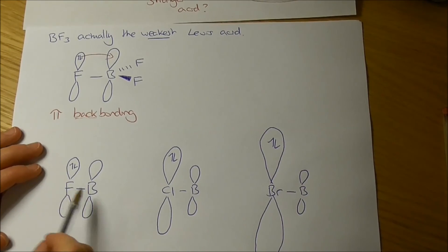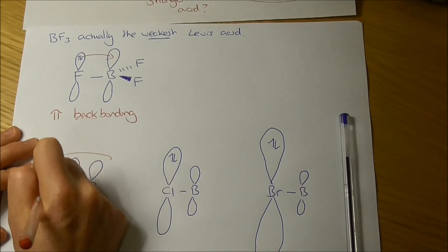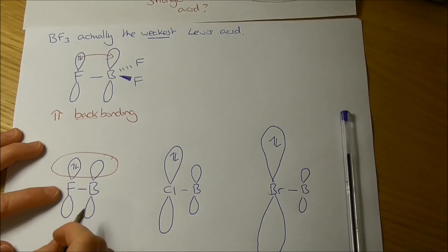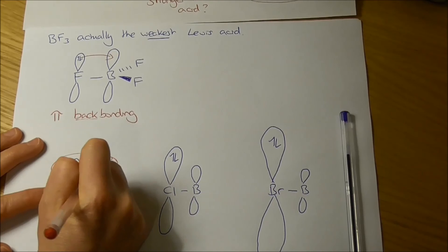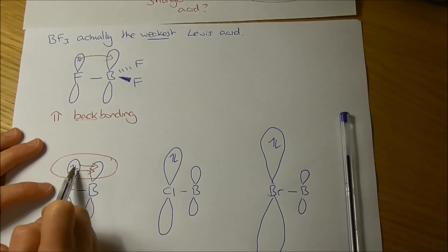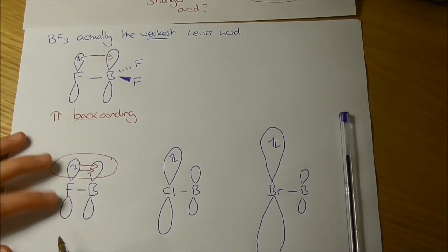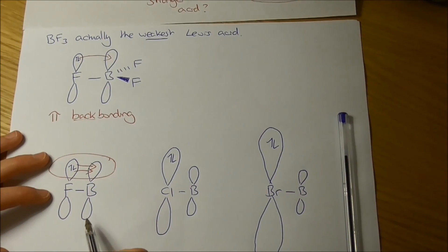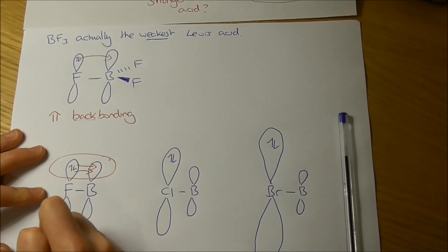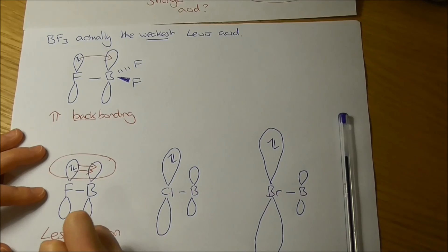So you can see quite clearly from this schematic that the best overlap is going to come in this boron-fluorine. So we're getting donation of lots of electron density from that fluorine-lone pair p orbital into the empty p orbital of the boron. That's stabilising that empty p orbital. It's making the boron less electron deficient.